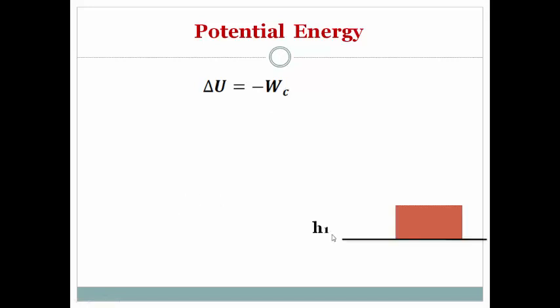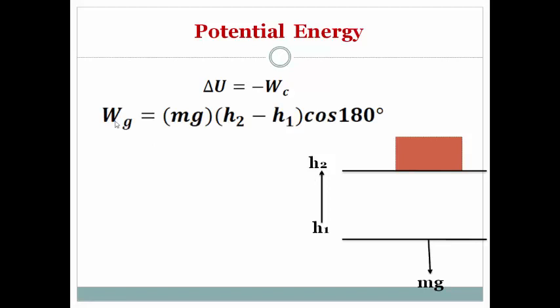Let us take an example. A box of mass m having weight mg is lifted from height h1 to h2. In that case, the work done by gravity will be equal to force times displacement. Force being the weight of the object, displacement h2 minus h1, and the angle between displacement and the force here is 180 degrees. Simplifying this we get work done by gravity is minus mg times h2 minus h1.